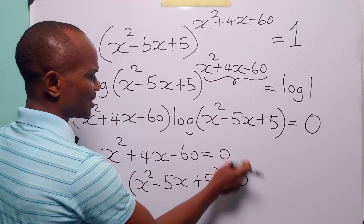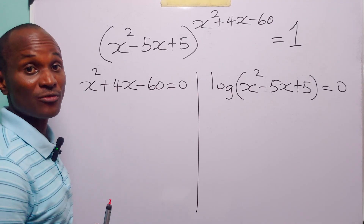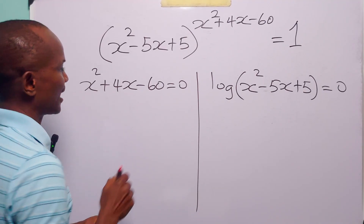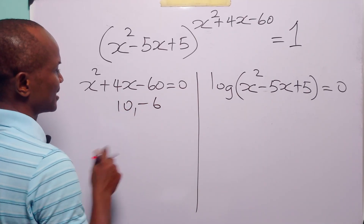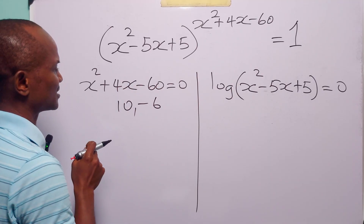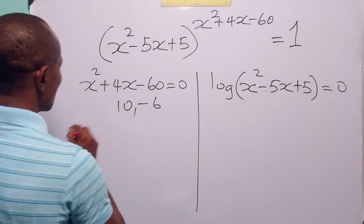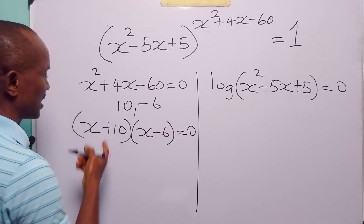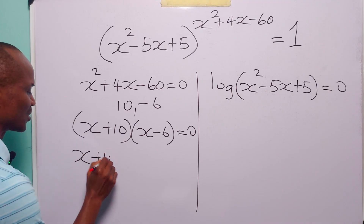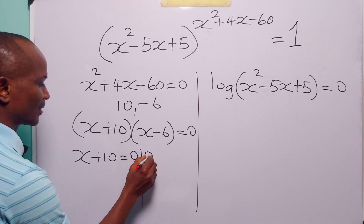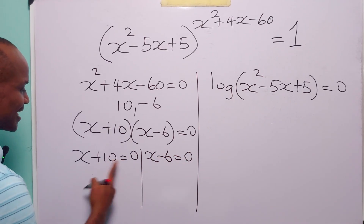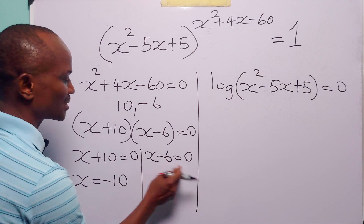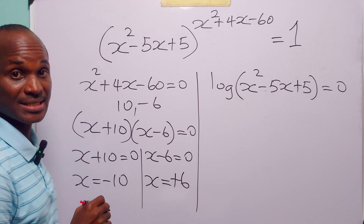We solve these two equations in turn. We can solve the first quadratic by factorization — we need factors of -60 that add up to +4. Those are 10 and -6, because 10 × (-6) = -60 while 10 + (-6) = 4. So we have (x + 10)(x - 6) = 0, giving us either x + 10 = 0 or x - 6 = 0.